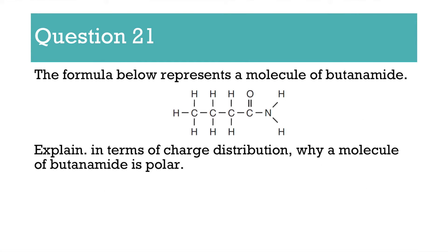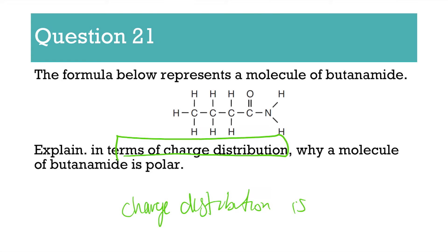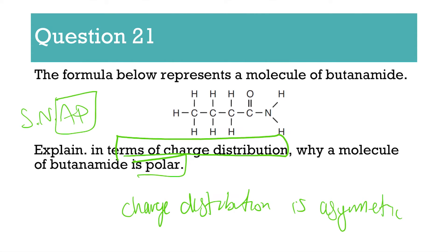Number 21 represents a structure of butanamide — you don't know what that means yet, but you will when we get to organic. It says, in terms of charge distribution, why is the molecule polar? The words 'charge distribution' need to be in your answer. If we're talking about polar, SNAP says asymmetric. You could also say it is uneven — an uneven distribution. Either of those mean the same thing: uneven distribution, asymmetric distribution — that is a polar molecule.